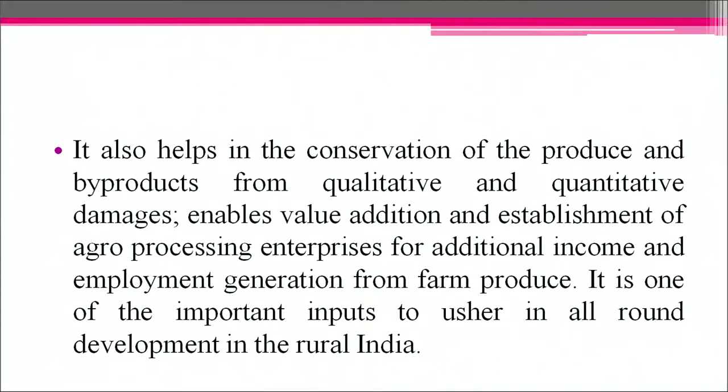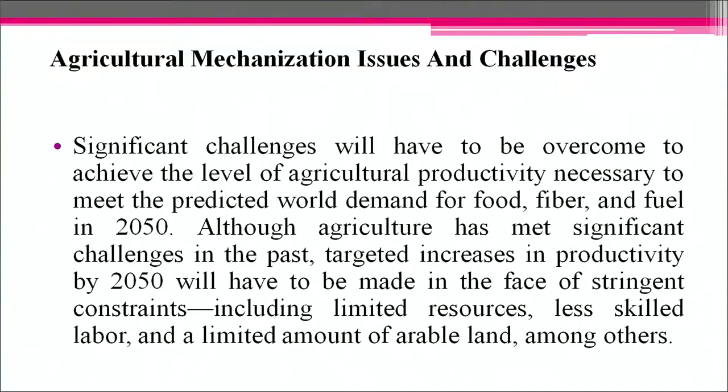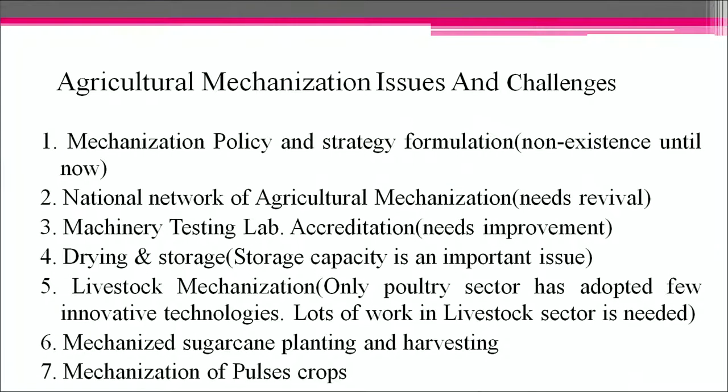Significant challenges will have to be overcome to achieve the level of agricultural productivity necessary to meet the predicted world demand for food, fiber and fuel in 2050. Targeted increases in productivity will have to be made in the face of constraints including limited resources, less skilled labor and limited arable land. Additional mechanization issues include mechanization policy and strategies formulation, national network of agriculture mechanization, machinery testing lab accreditation, drying and storage, livestock mechanization, mechanized sugarcane planting and harvesting, and mechanization of pulse crops.